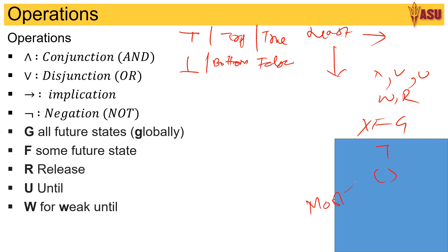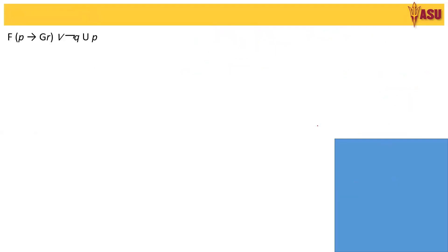Now keeping this in mind, let's draw the parse tree. Here is a formula with brackets. Considering these, we have the parse tree as R, then we have F, and on the other side we have the U operation until. Here we have the implication. This side we have P, G, R, and this side we have NOT, Q, and P.